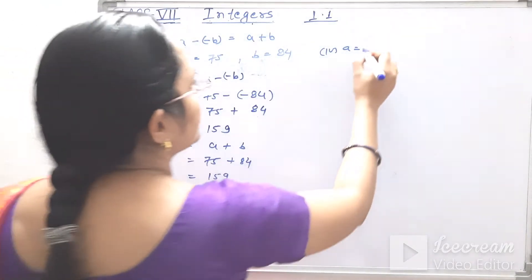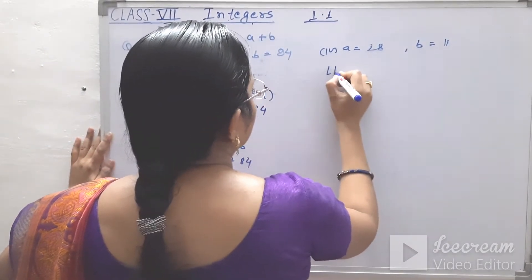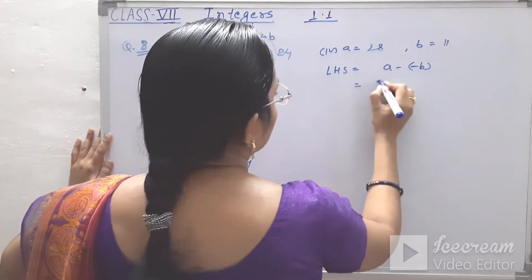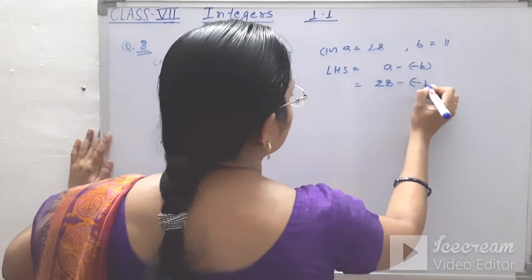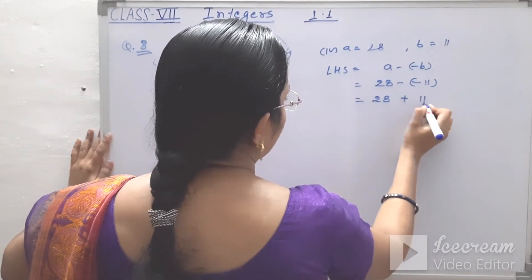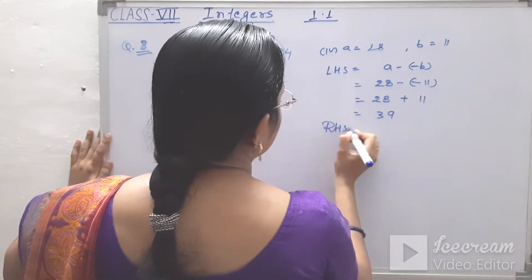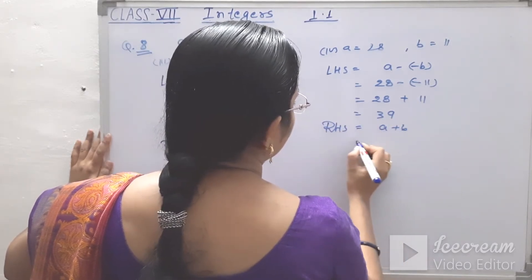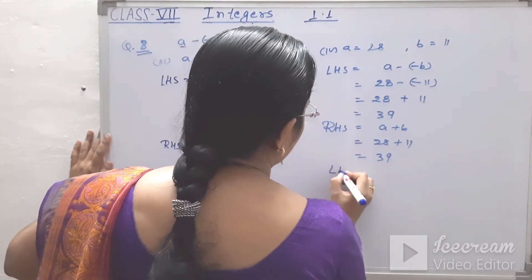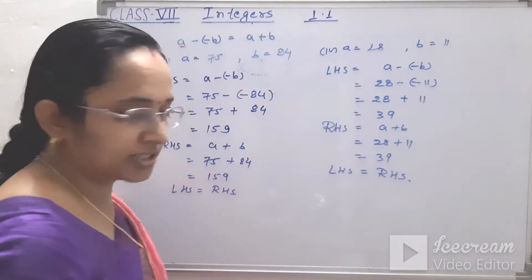Fourth: a equals 28 and b equals 11. Left hand side: 28 minus minus 11 equals 28 plus 11 equals 39. Right hand side: a plus b equals 28 plus 11 equals 39. Left hand side equals right hand side.